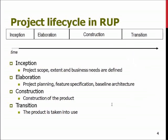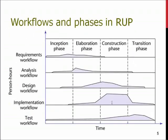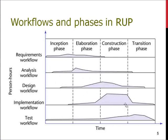In the last phase — transition — we have the product taken into use, first possibly with only a few customers and later with several. The idea, as shown in the diagram, is that across inception, elaboration, construction and transition — which correspond to requirements gathering, design, construction and development, and testing and launch — we have testing activities in all phases, implementation activities in almost all phases, and analysis and design work in each phase. Analysis and design are more focused in the early phases, while implementation is mostly done in construction, but in all phases we are doing something.